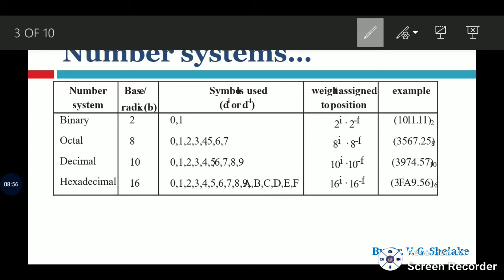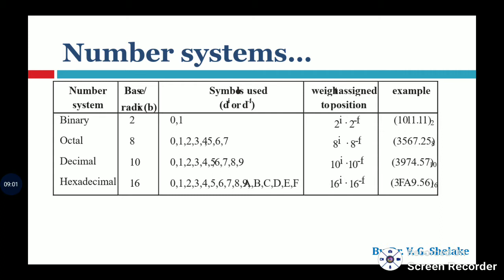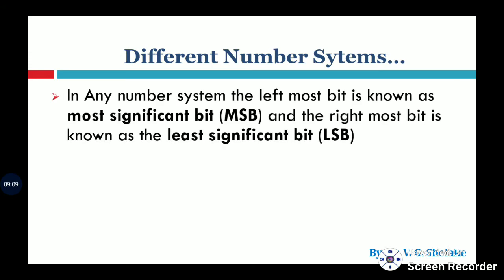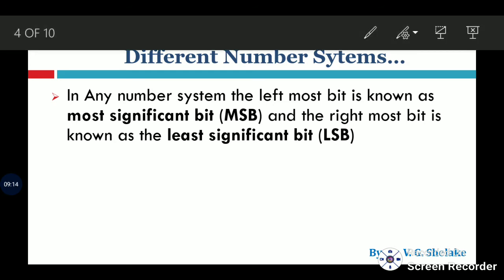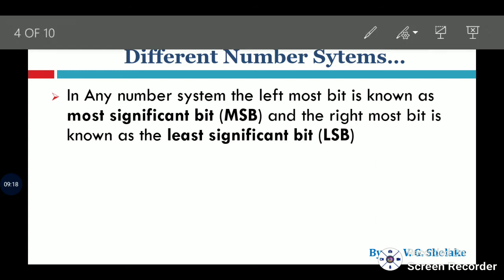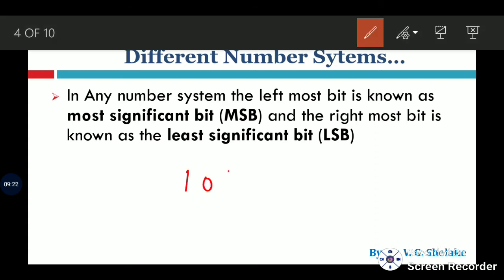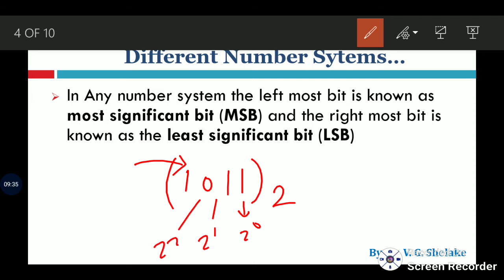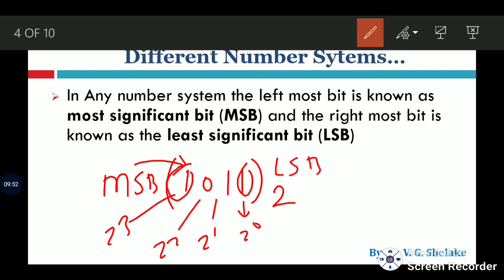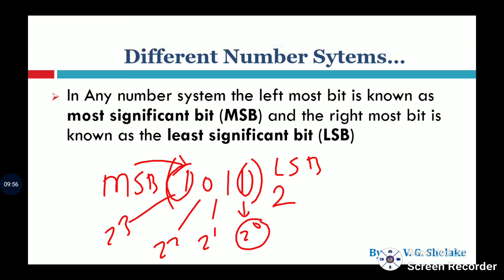Now we will see how to convert from one base to another. In any number system, the leftmost bit is known as the most significant bit (MSB). For example, in the binary number 1011, the leftmost bit has the highest weight — 2 raised to 3. The rightmost bit is called the least significant bit (LSB) because its weight is very low, 2 raised to 0.